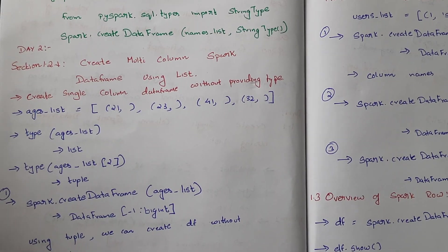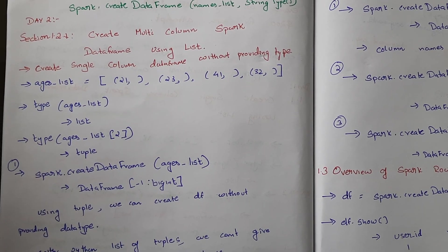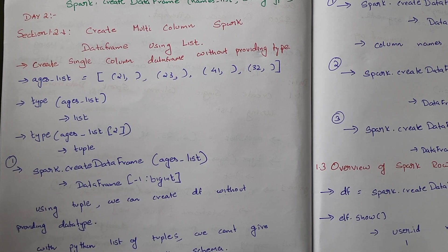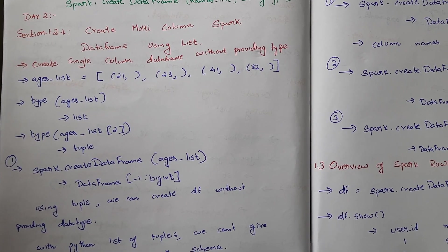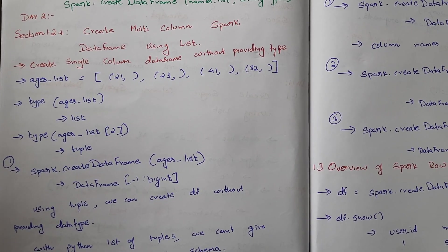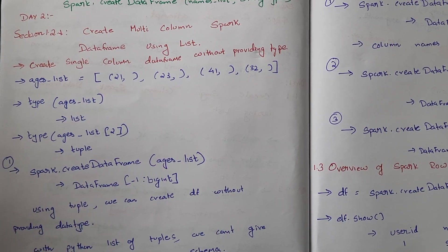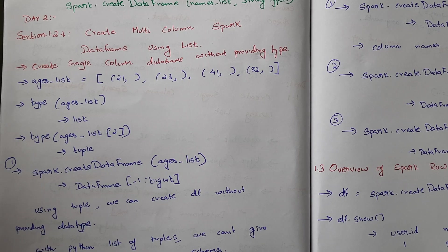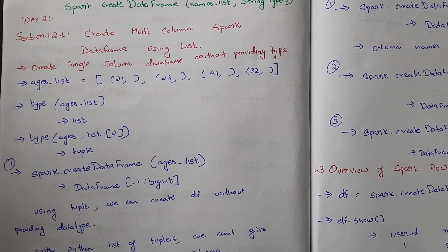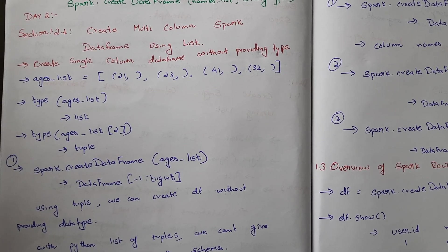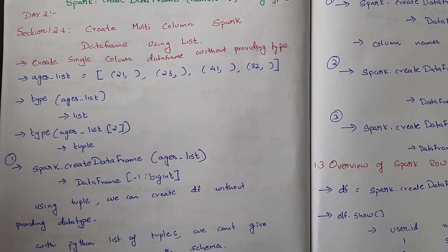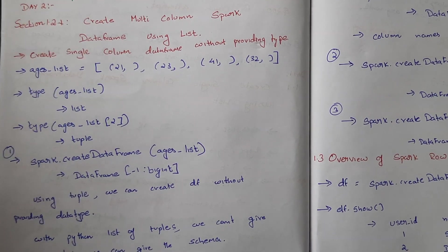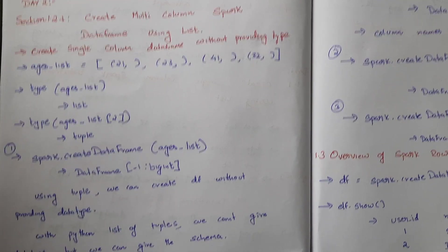Today we'll first see how to create a single-column Spark DataFrame without providing a type. We'll create an ages list which has a list of tuples — for example, a list containing tuples like (21,), (23,), (41,), (32,). If we check the type of ages it is list, and if we index into it, each element is a tuple.